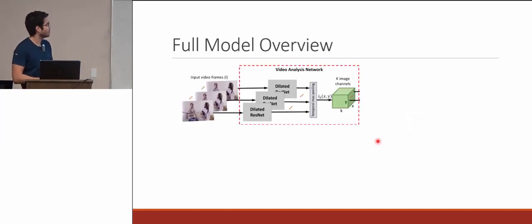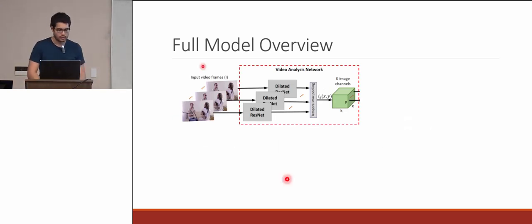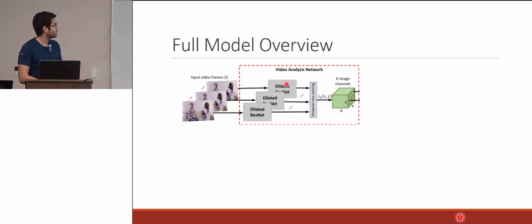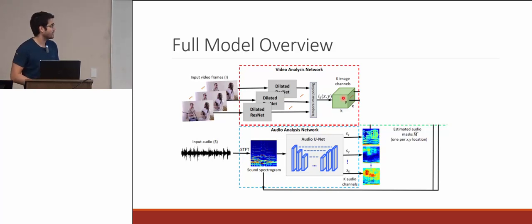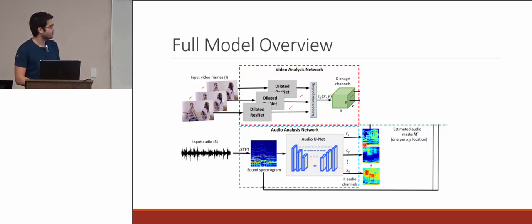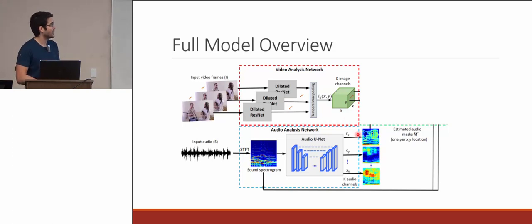The full model has several networks. The video analysis network takes input from video frames and feeds it into a modified ResNet called dilated ResNet, then through a temporal max pooling layer, outputting K image channels. The audio analysis network takes the raw audio feed, transforms it into a sound spectrogram, and feeds that into a modified U-Net, outputting K audio channels. Both networks output the same number of K channels, which becomes important later.